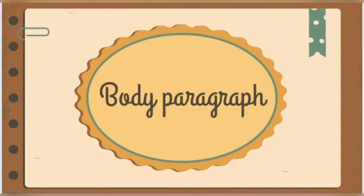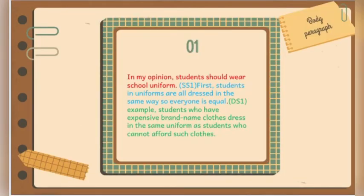Body paragraph. The first line is the topic sentence: in my opinion, students should wear school uniform. The second line is supporting sentence one: first, students in uniform are all dressed in the same way, so everyone is equal. The third line is the developing sentence: for example, students who have expensive brand name clothes dress in the same uniform as students who cannot afford such clothes.